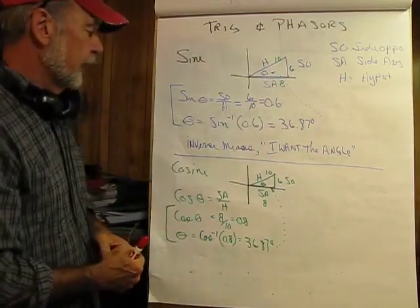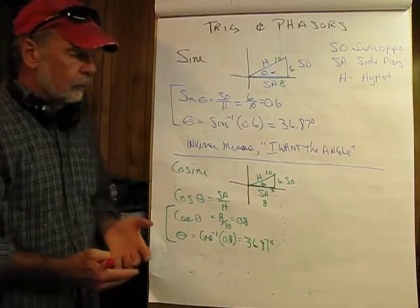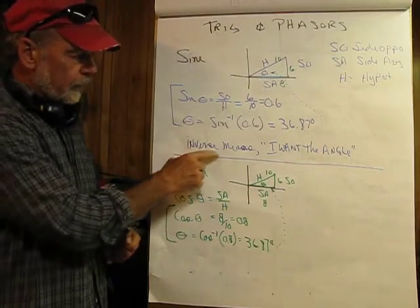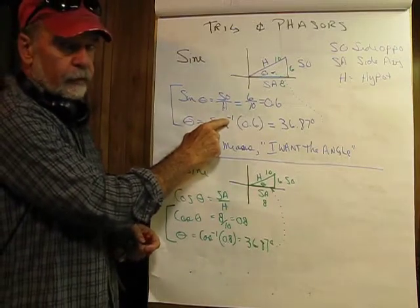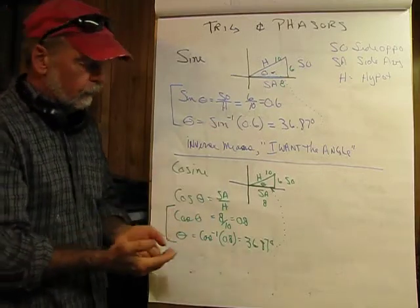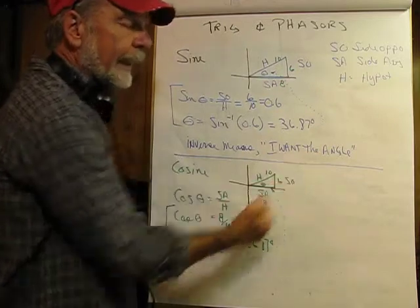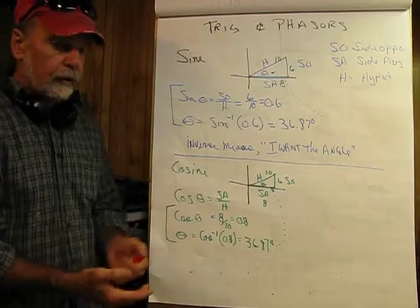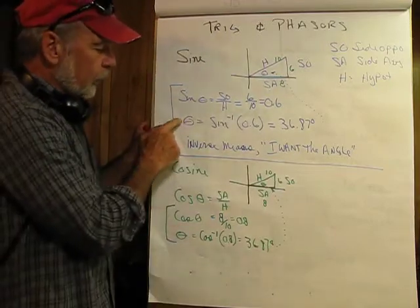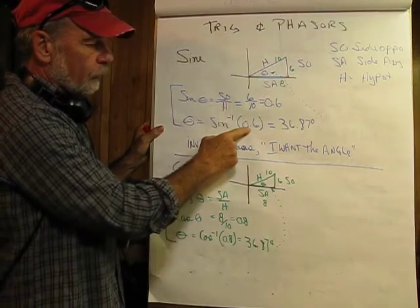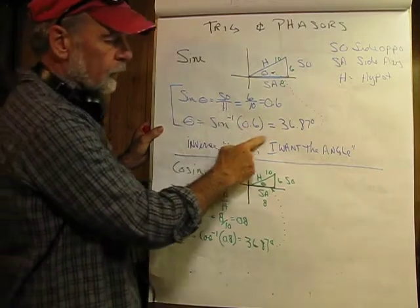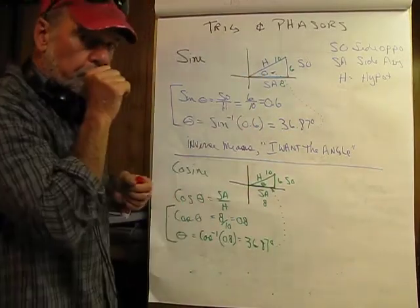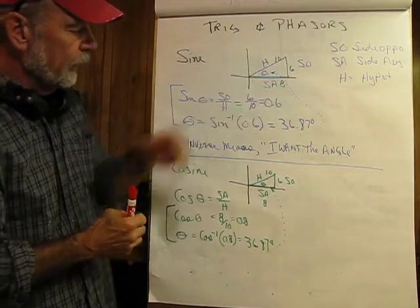Now, if we want to find the angle, that's called an inverse operation. You can see that by sine raised to the negative 1 power — that's the indication that you're looking for the inverse. It means I want the angle, plain and simple. Any inverse operation is you're looking for the angle. So in this case, the angle would be equal to the inverse sine of 0.6, which comes out to be 36.87 degrees — the angle between the side adjacent and the hypotenuse.